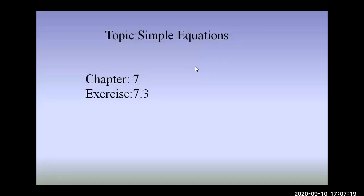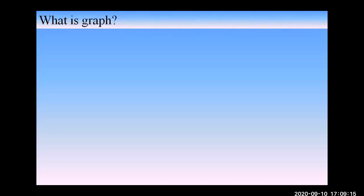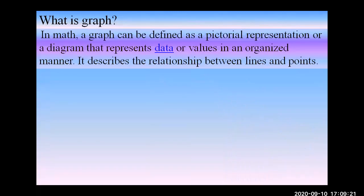Today's topic is Simple Locations, Chapter 7, Exercise 7.3. Before we start solving, we'll first learn some definitions. What is a graph in math? A graph can be defined as a pictorial representation or diagram that represents data or values in an organized manner. It describes the relationship between lines and points.